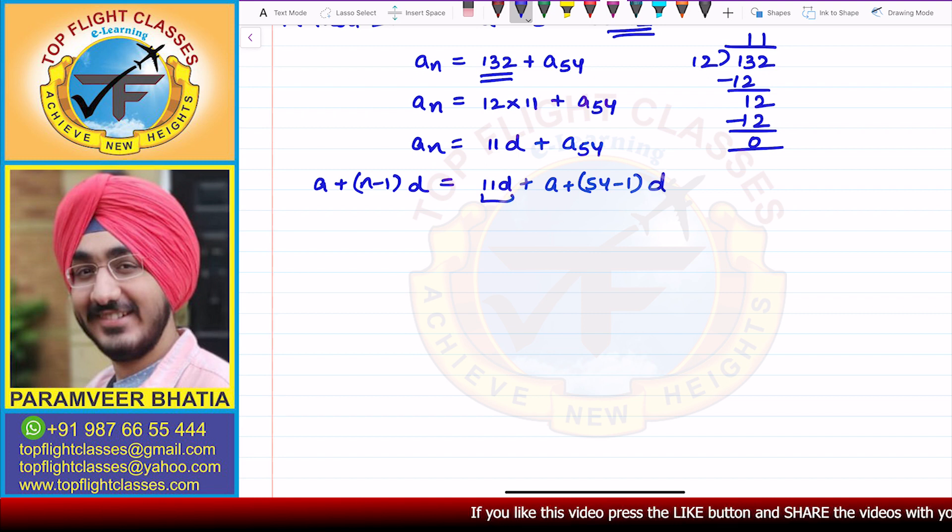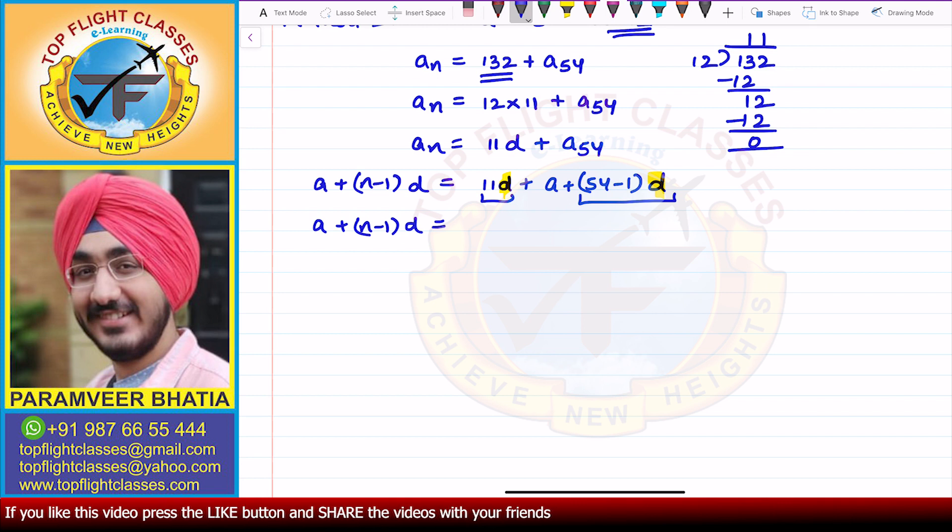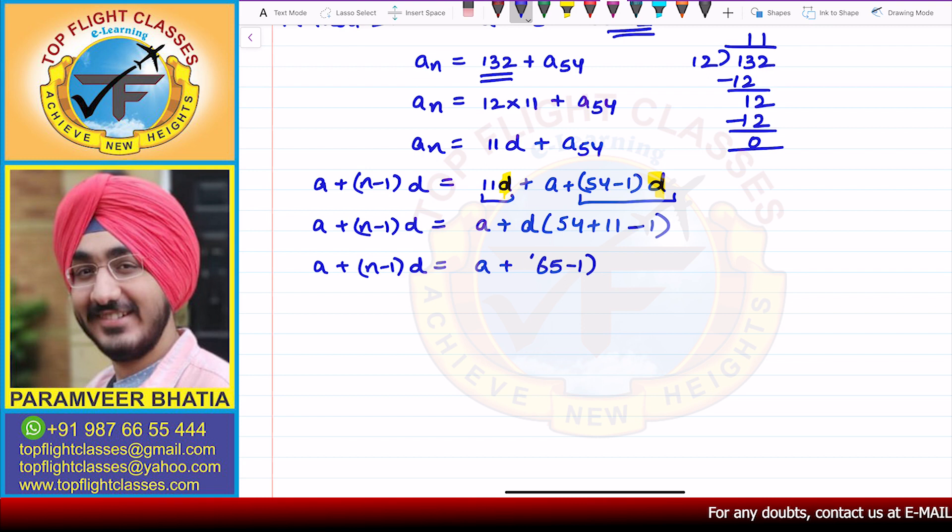If we look at this term and this term, you can see that D is common. In the next step, I get A plus (N minus 1) times D equals A plus, taking D outside, (54 plus 11 minus 1). From here, A plus (N minus 1) times D equals A plus (65 minus 1) times D.